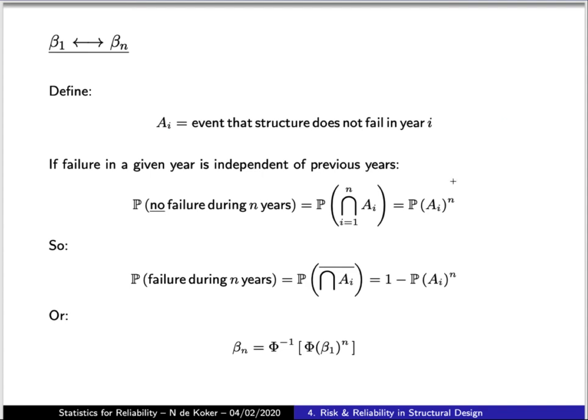So if the structure does not fail during its lifetime, that means it does not fail during the first year of its lifetime and during the second and during the third all the way up to year n. So the probability of it not failing in its lifetime is then the product of the individual probabilities of it not failing in any given year. So if we assume that the probability of not failing during a year is constant for every year, we can simply take the annual probability of not failing and raise that to the power of the number of years in the lifetime.